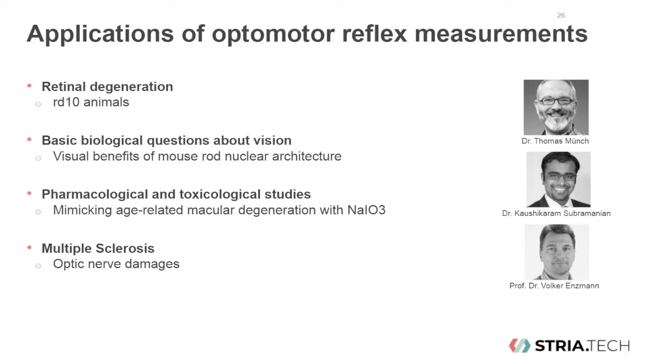In the final example, Volker will introduce us to a mouse model commonly used to study multiple sclerosis, which does indeed also have visual deficits. These are caused by damages to the optic nerve and disease progression can be monitored with the optomotor reflex.